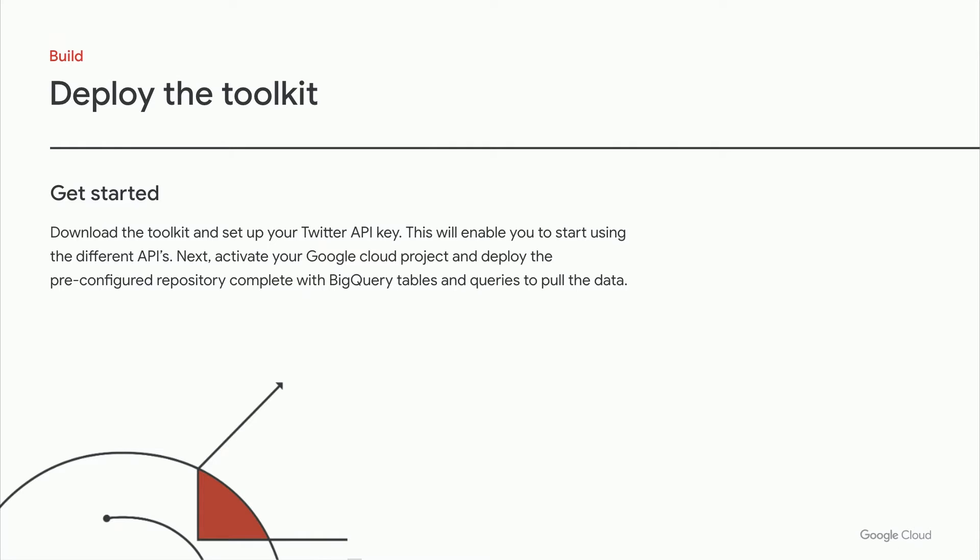Getting started is very simple. If anyone has 60 minutes to spare, they can sign up for Twitter API Essential Access, sign up for Google Cloud, download the toolkit, and start playing around. Now let's shift and talk about how business users can get the most value out of these insights. Let me illustrate a few dashboards that can be built with the toolkit.